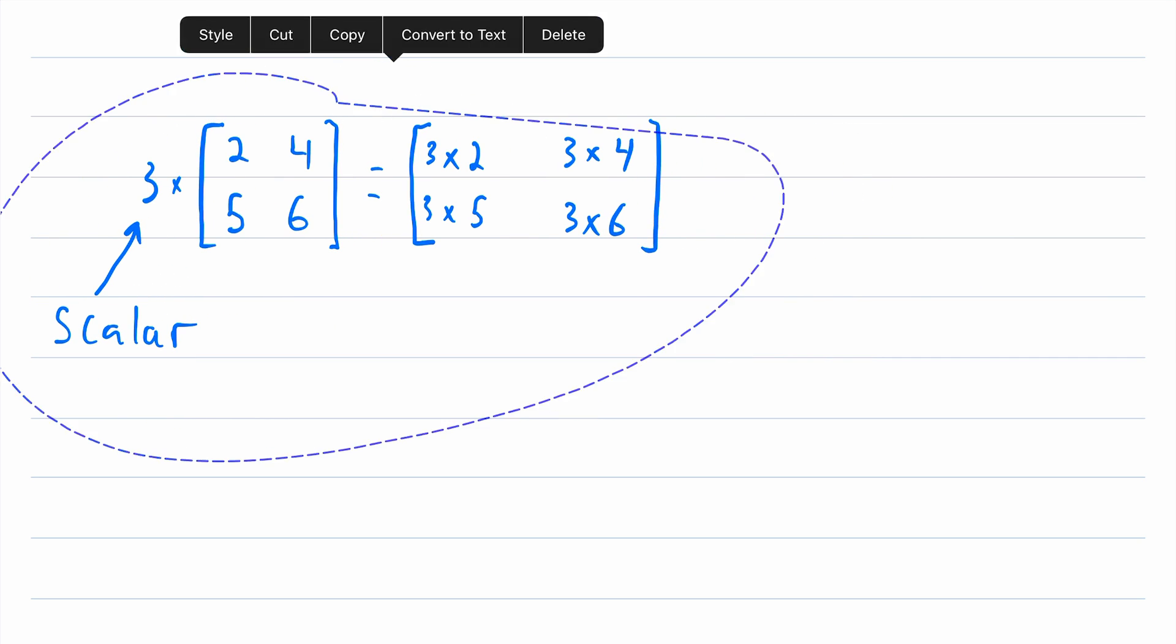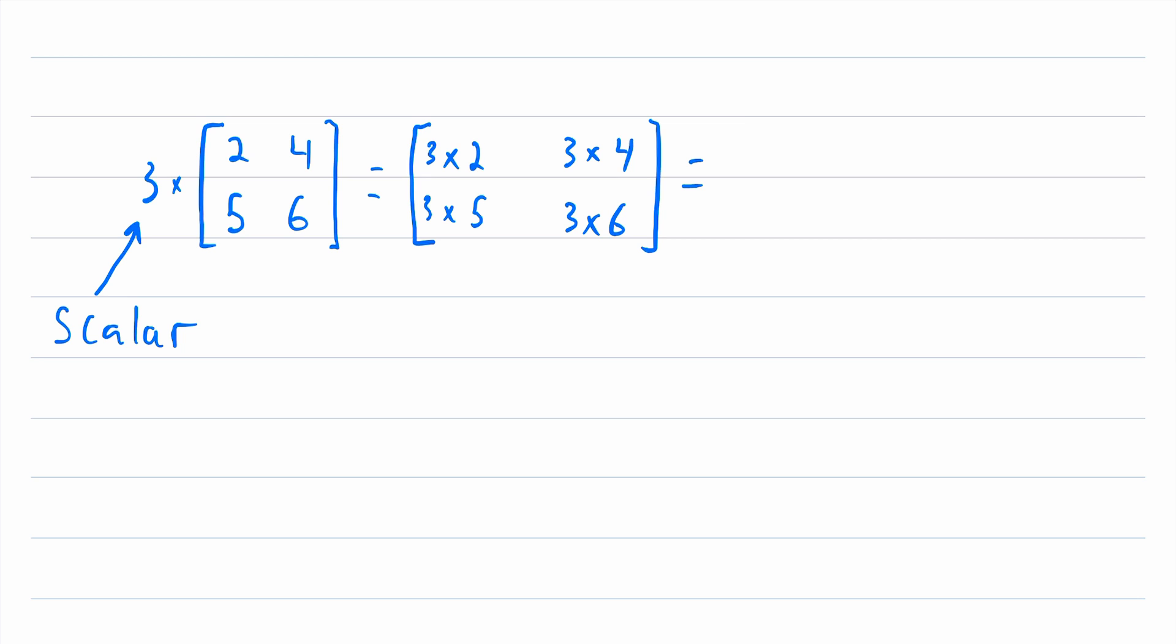So finishing this up, let me move this to the left. And we'll write what this matrix is equal to, three times two is six, three times five is 15, three times four is 12, and three times six is 18.